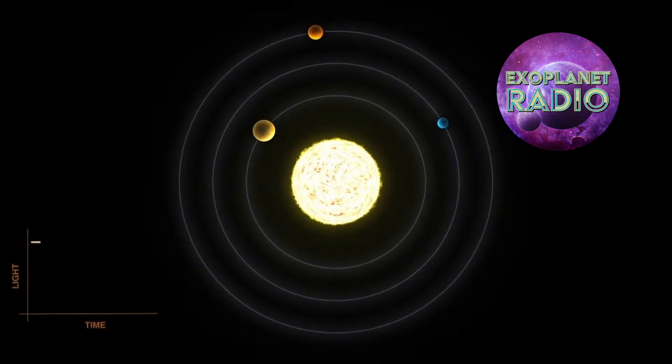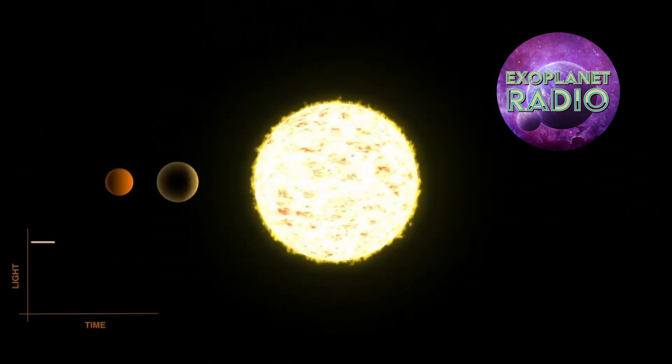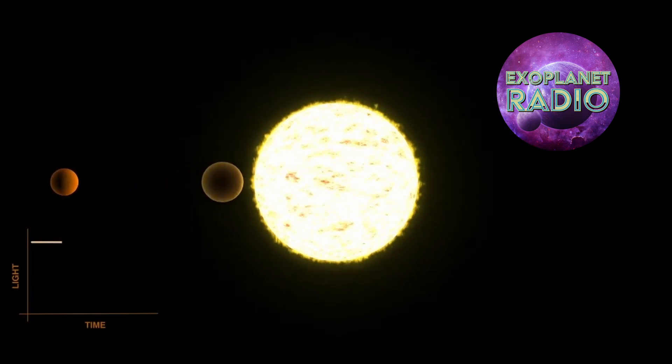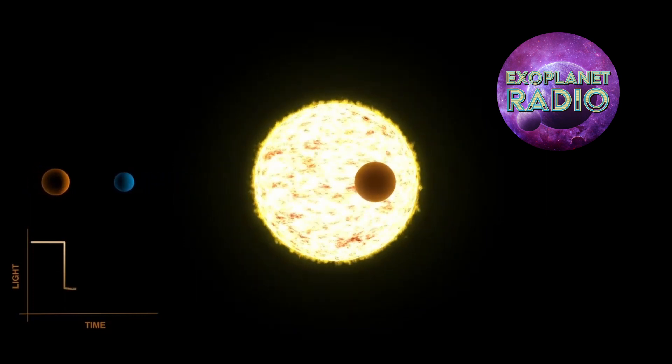Over the course of this show, we've talked many times about the transit method for detecting exoplanets. It is simply the measure of a star's decrease in brightness as a planet passes through our line of sight.